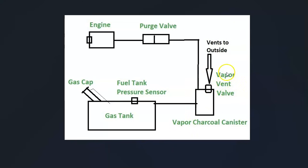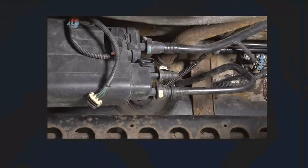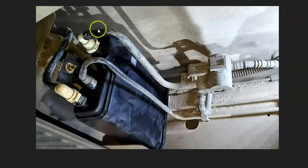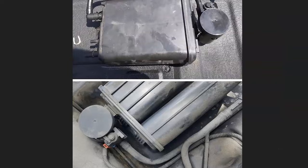If the gas cap looks good, the next thing to check is the vent valve. It's located underneath the vehicle near the gas tank — either right on the charcoal canister or separate and off to the side. Go locate the vent valve on your particular vehicle and either test it or replace it, because the most common problem with a P0449 code is that the vent valve is having a problem — stuck open, stuck shut, or just not responding.